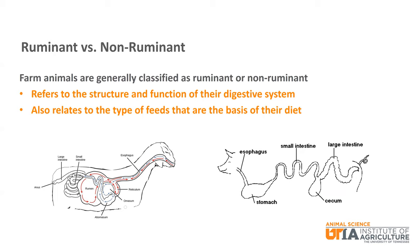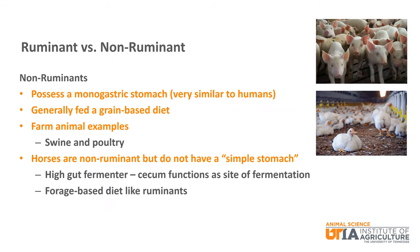Farm animals are generally classified as ruminants or non-ruminants. These classifications refer to the structure and function of their digestive system, as well as the type of feed that is the basis of their diet. Non-ruminant animals possess a monogastric stomach and are sometimes called simple stomach. Their structure and function is very similar to that of humans. They primarily eat a grain-based diet. Farm animal examples include swine and poultry.